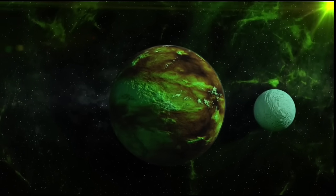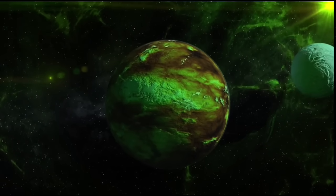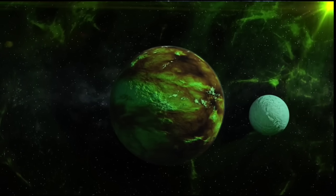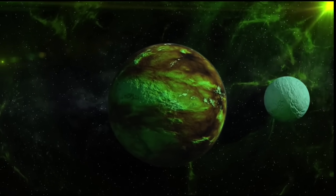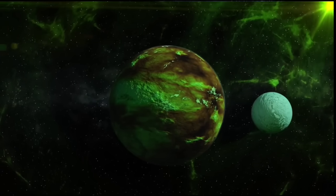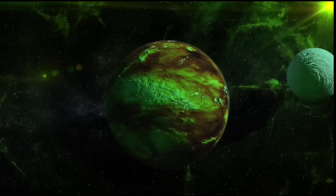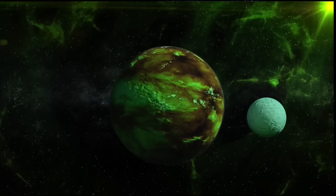Exoplanets like K2-18b, which fall between the sizes of Earth and Neptune, are a rare category in our solar system due to the absence of similar planets in our immediate vicinity. Astronomers are intrigued by the possibility that K2-18b has a hydrogen-dominated atmosphere and significant carbon content.